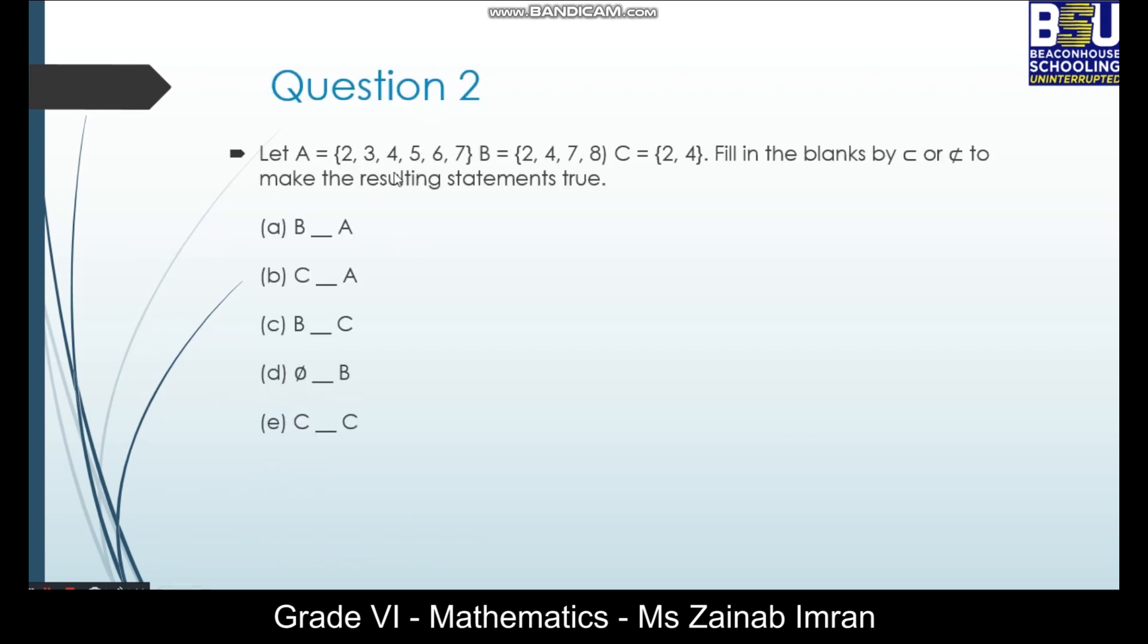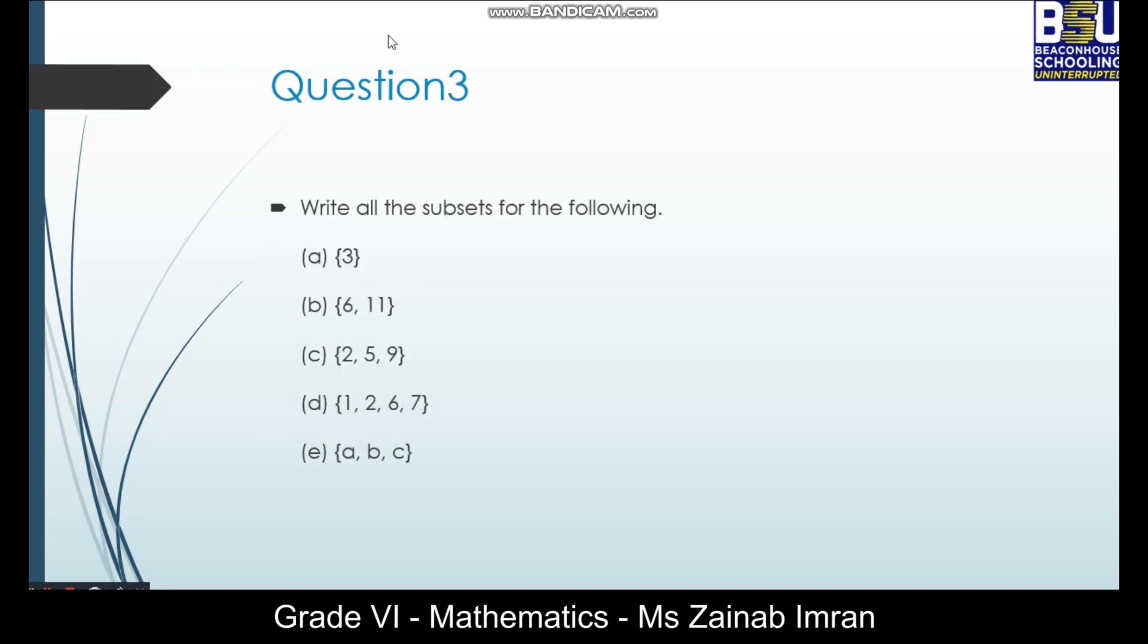Question number 2. If A has elements 2, 3, 4, 5, 6, 7, B has elements 2, 4, 7, 8 and C has 2 and 4, you have to fill in the blanks by putting these symbols whether these statements are true or false.